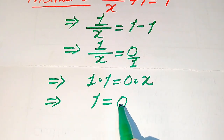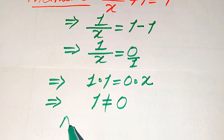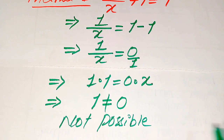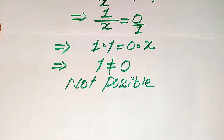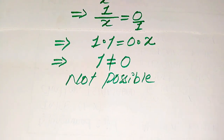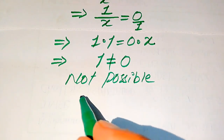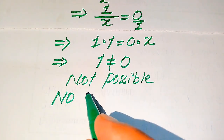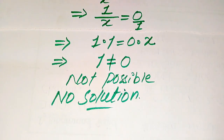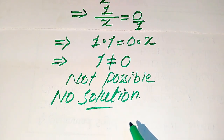Again we see that 1 equals 0, which is not possible since 1 is not equal to 0. This means we cannot get any value of x — in other words, the values of x do not exist in this question. Therefore, the final conclusion is that this question has no solution and no extraneous root.